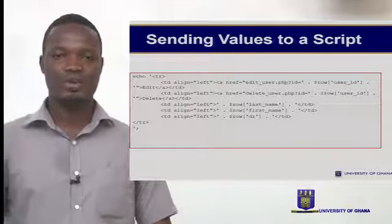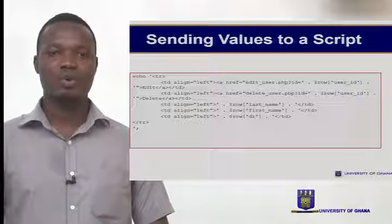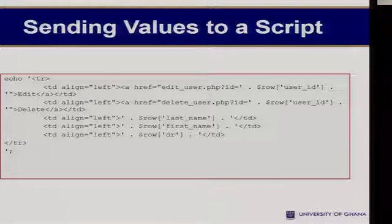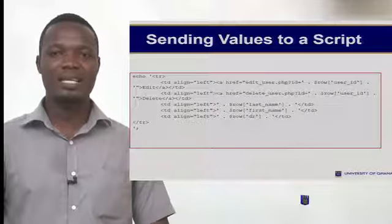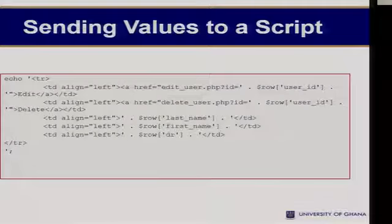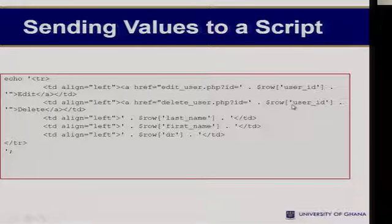When we send values to a script, we are able to process them. The snippet of code you see now is trying to send some value to the script. Here we are implementing an edit user and a delete user. To edit a user, we are using the user's ID. In our script, we are passing the user ID, which we access using the row variable. You can see the href value being edit_user.php?ID= followed by the variable row. Here we are also trying to delete, using a variable for deletion, and then we can proceed to pass some parameters.